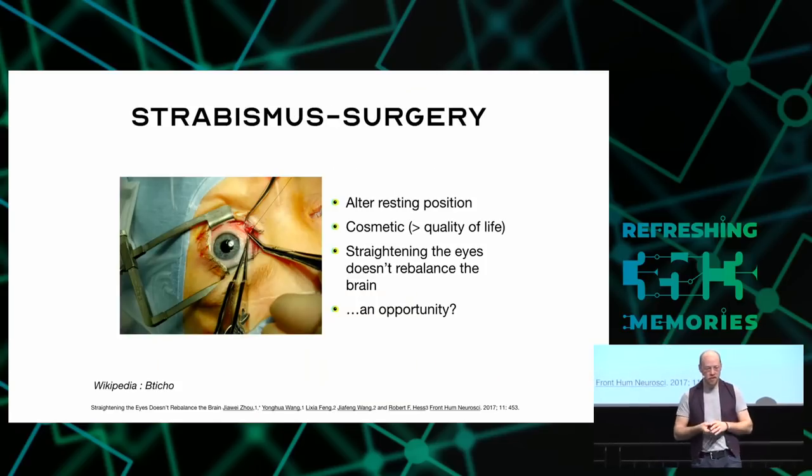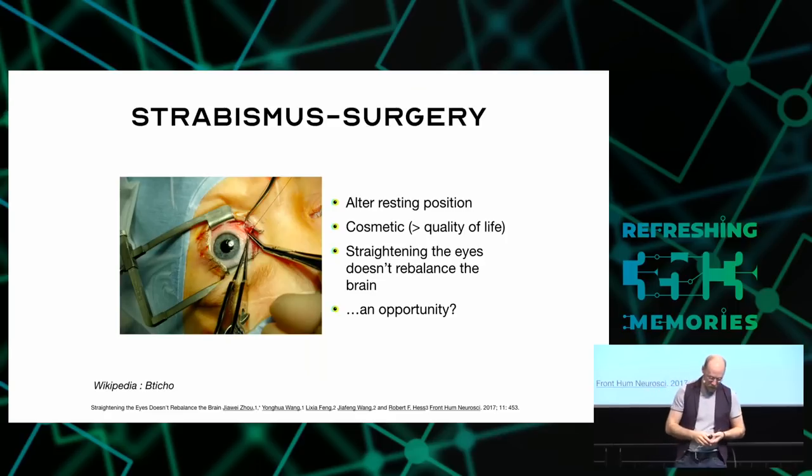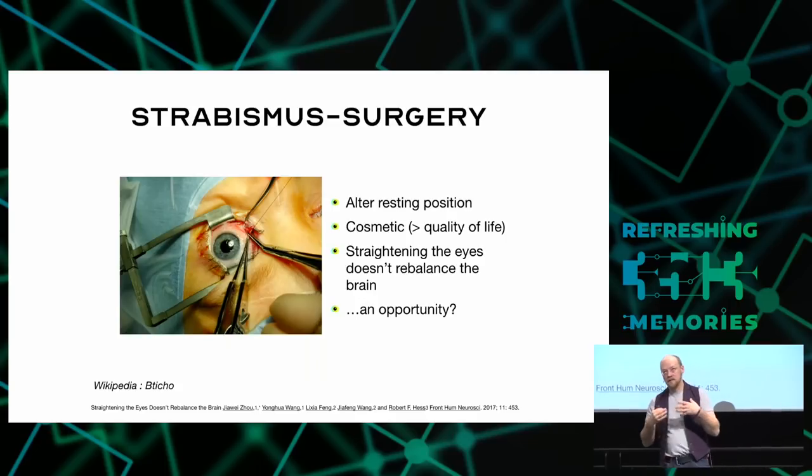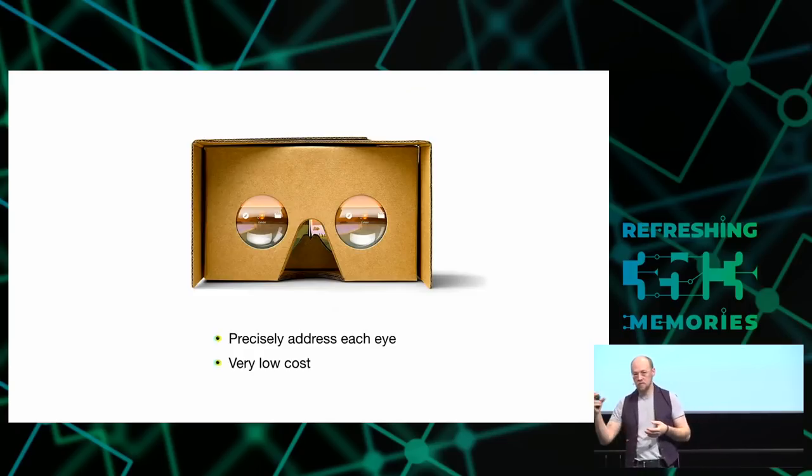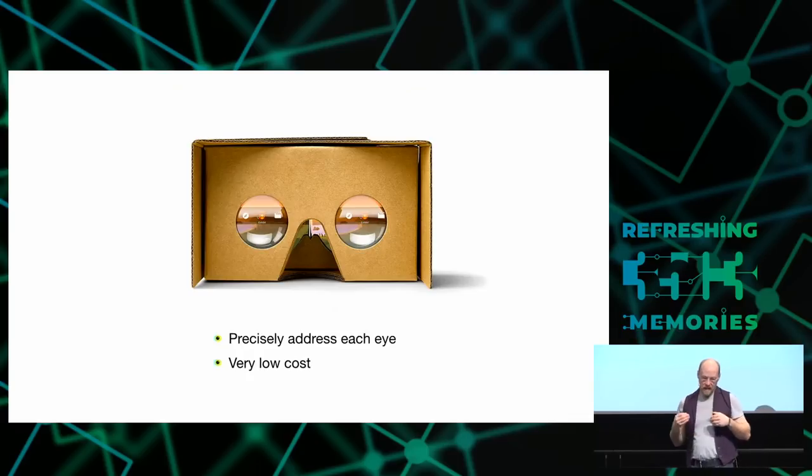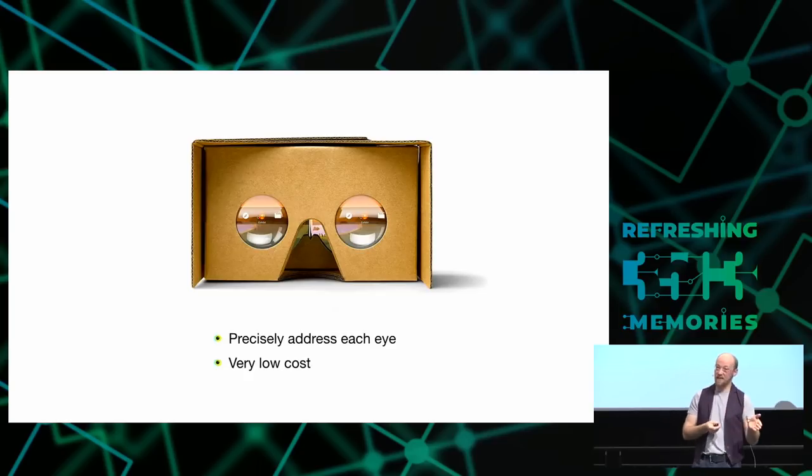So the remaining option, as far as ophthalmology is concerned, is surgery. To cut and shorten and stick back together your eye muscles. So the resting position of your eye is more or less in the middle of your eye socket. So this is cosmetic, and that's not to say it's without value. It can improve your quality of life. It can make you feel better about yourself. But it doesn't rebalance the brain. It doesn't mean that you're going to recover this binocular vision. But it might be an opportunity. Because with the eyes roughly straightened, it means that you can certainly look through the lenses of even the cheapest VR headsets to be used with the cheapest of phones.